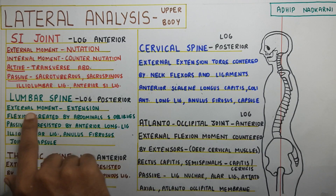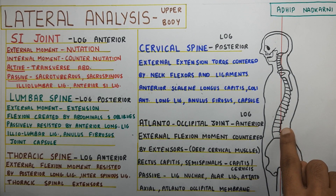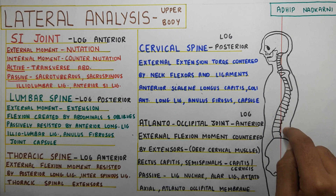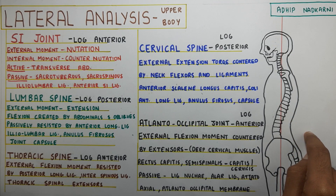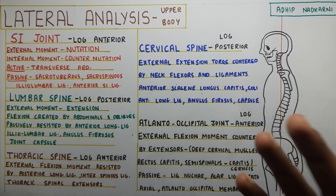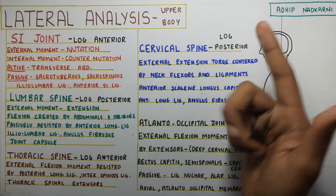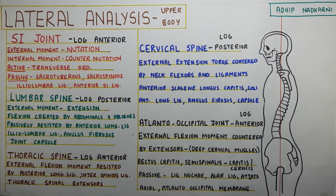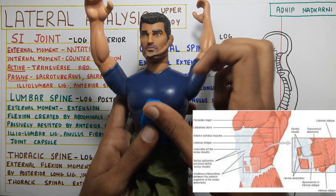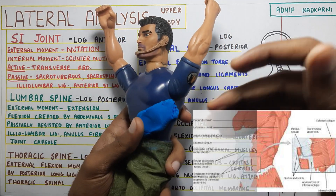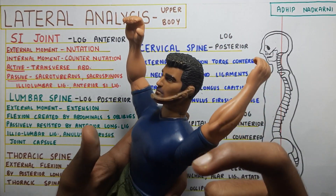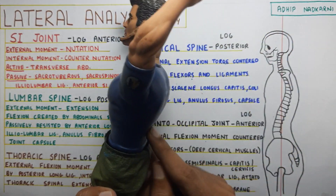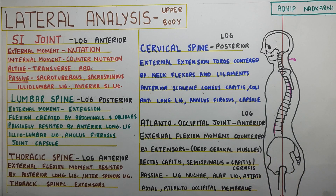Going on to the lumbar spine, the line of gravity goes posteriorly. So gravity will be pulling your lumbar spine into extension. This will be countered by flexion. What are the flexing muscles? Abdominals and obliques. So the external movement of extension is countered by flexion created by your abdominals and obliques — on the front and from the sides — creating flexion torque and preventing you from going into total extension. Passively, there is the anterior longitudinal ligament, iliolumbar ligament, annulus fibrosis, and joint capsule, which prevent that extension movement.